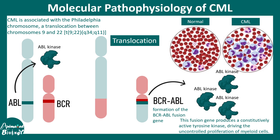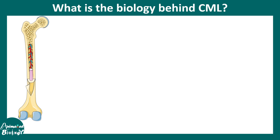This uncontrolled proliferation of leukocytes leads to chronic myelogenous leukemia. Since it is a blood cancer involving a problem with the maturation of white blood cells, let us understand the underlying biology in a bit more detail.